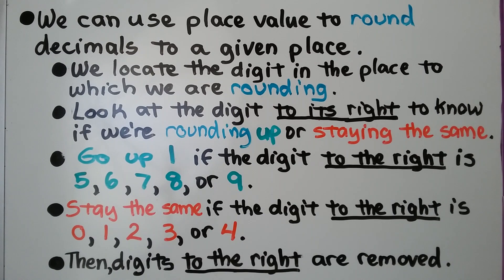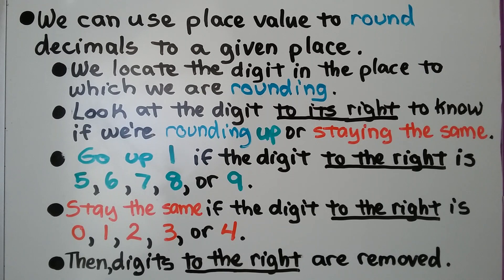We can use place value to round decimals to a given place. We locate the digit in the place to which we are rounding. We look at the digit to its right to know if we're rounding up or staying the same. We go up one if the digit to the right is a five, six, seven, eight, or nine. We stay the same if the digit to the right is a zero, one, two, three, or four. Then digits to the right are removed.